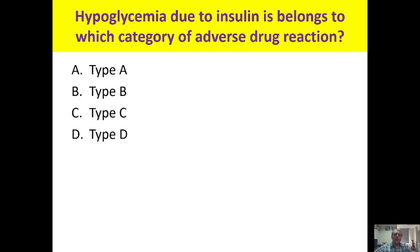Hypoglycemia due to insulin belongs to which category of adverse drug reaction? Insulin reduces blood sugar; if the action is excessive it leads to hypoglycemia — this is an augmented, predictable reaction. Type A is augmented, B is bizarre (unpredictable), C is continued (long-term use), and D is delayed. Insulin-induced hypoglycemia belongs to type A.